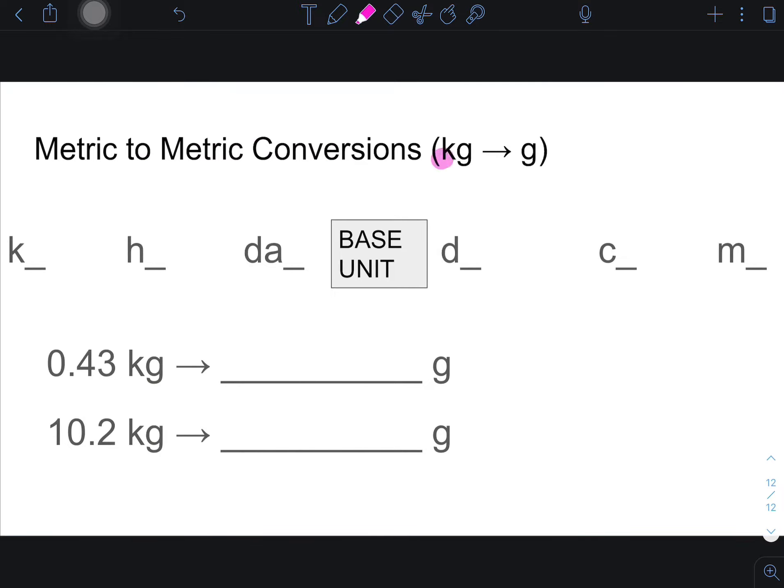Switch that. Now we're going from kilograms to grams. So now we're going from here, one, two, three to the right. So one, two, three. Now we're talking 430 grams. Try the next one on your own. Hit pause. Unpause it when you're done. You should have gotten 10,200 because the decimal point was here and then we have to go one, two, three. So these are really just unit conversions between kilo and milli.